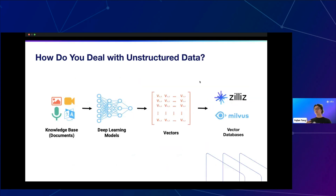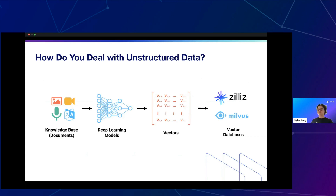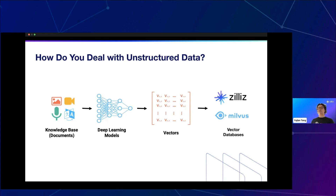To interact with unstructured data, you take your documents and put them into an embedding model. You choose a corresponding deep learning model — for images, something like ResNet-50; for sentences, sentence transformers. You cut off the last layer of your model to get the vector embedding, since the last layer is usually classification or prediction. That output gives you a vector, which you put into a vector database like Milvus or Zilliz, enabling you to query and interact with your unstructured data.